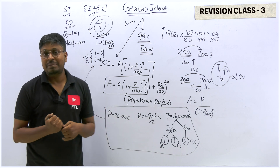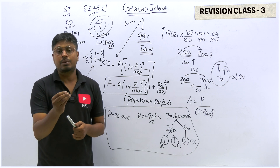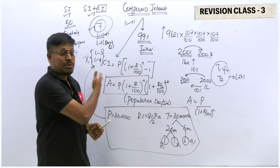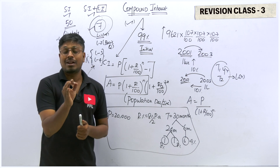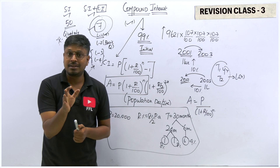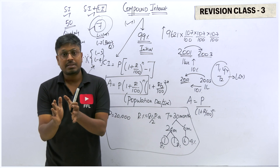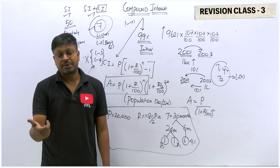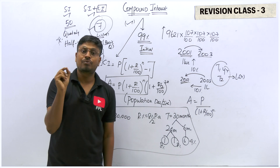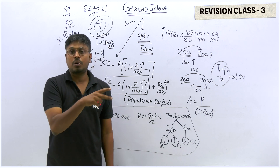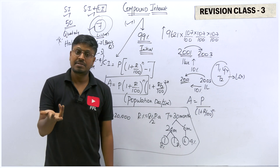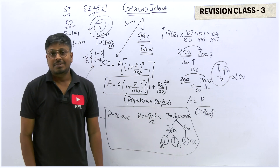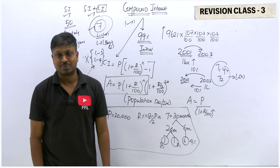If you are learning compound interest for the first time, please watch all seven videos — each is about 15 to 20 minutes, so in one and a half hours you can cover everything. Focus on understanding the concepts and traditional methods. Definitely you can score well on compound interest in the prelims exam. The next revision class will cover both simple interest and compound interest together, including formulas for finding the rate of interest from the difference between SI and CI. Thank you for watching — see you on the live class!